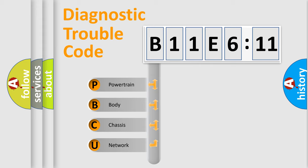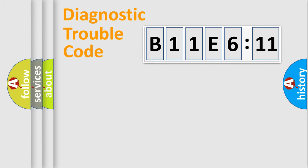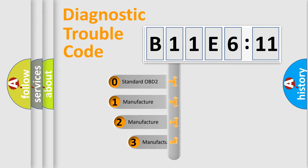We divide the electric system of automobiles into four basic units: Powertrain, Body, Chassis, and Network. This distribution is defined in the first character code.